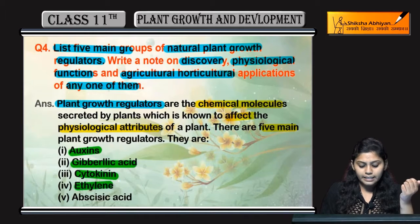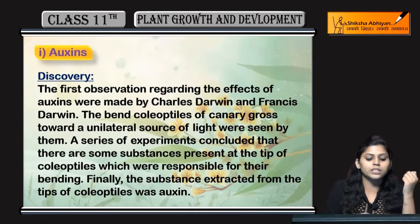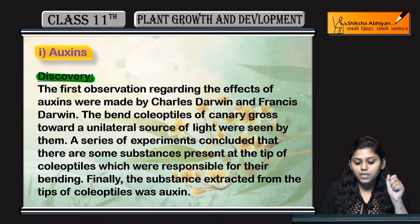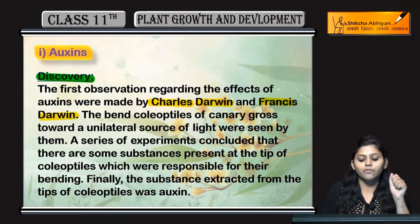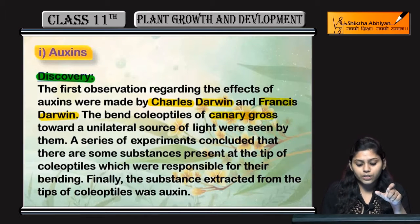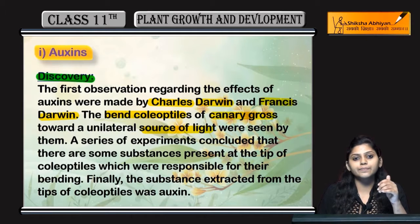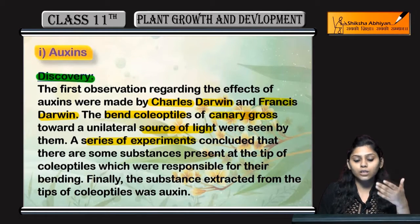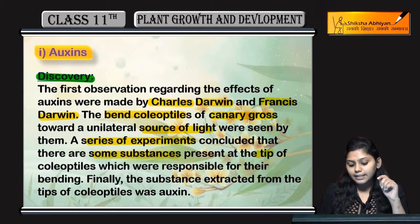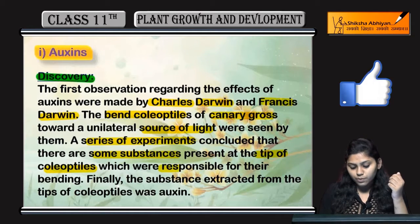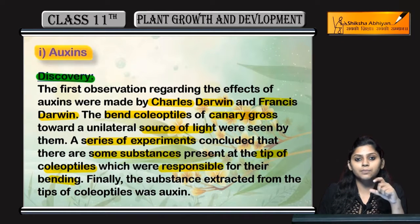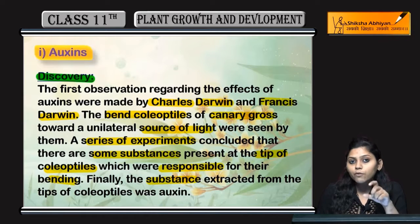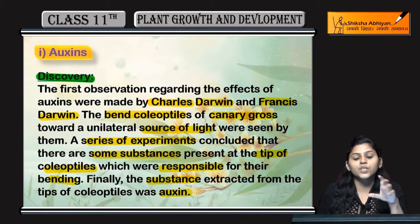cytokinins, ethylene, and abscisic acid. We will study auxins in detail — their discovery and applications. First, discovery: auxins were first discovered by Charles Darwin and Francis Darwin. They observed bending of the coleoptile and conducted a series of experiments. They concluded that there are some substances present at the tip of the coleoptile which were responsible for the bending towards the light source. Finally, the substance extracted from those coleoptile tips was found to be auxin — that is how the discovery of auxin happened.